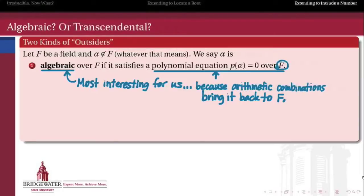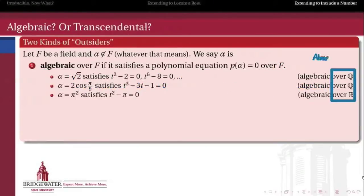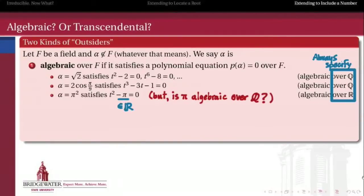Here are some examples of algebraic numbers. The square root of 2 is algebraic over the rationals. Twice the cosine of pi over 9 is an interesting example because it certainly doesn't look like it should be algebraic, but it turns out it satisfies the equation t³ − 3t − 1 = 0, making it algebraic over the rationals as well. The number pi squared is algebraic over the real numbers — it satisfies the polynomial equation t² − pi = 0, and since pi is a real number, pi squared is algebraic over the reals. But is pi algebraic over the rationals? We know pi is irrational, but does it satisfy a polynomial equation with rational coefficients?